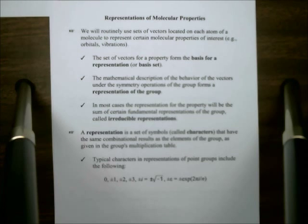That representation in most cases will be the sum of some very basic representations which are called irreducible representations. All of these representations have a set of numbers that we would call characters. In general group theory, we can construct groups of things other than numbers.